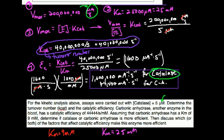Now let's compare the KMs. Carbonic anhydrase has a Km of 9 millimolar, while catalase had a Km of 25 millimolar. KM is a measure of tightness of binding — it's similar to a dissociation constant, so it's backwards: the lower the KM, the tighter the binding; the higher the KM, the looser the binding. So carbonic anhydrase, with its lower KM of 9 millimolar, actually binds tighter. Catalase doesn't bind as tightly because it has a higher KM.